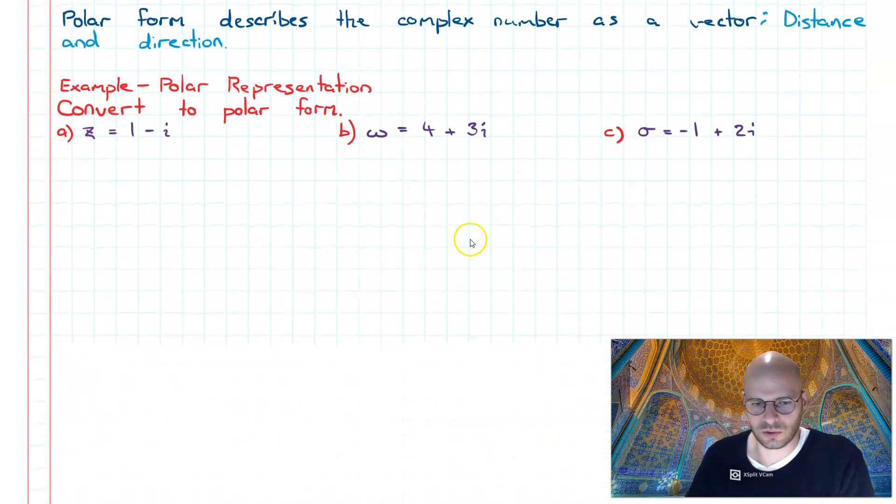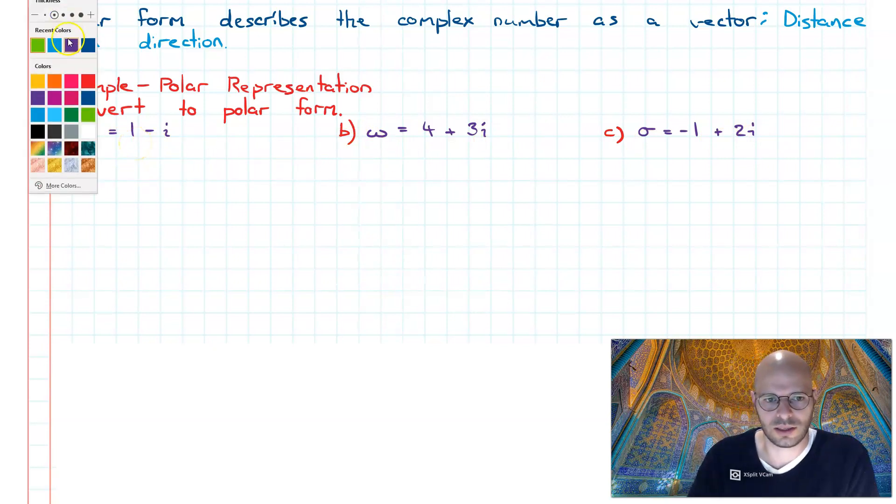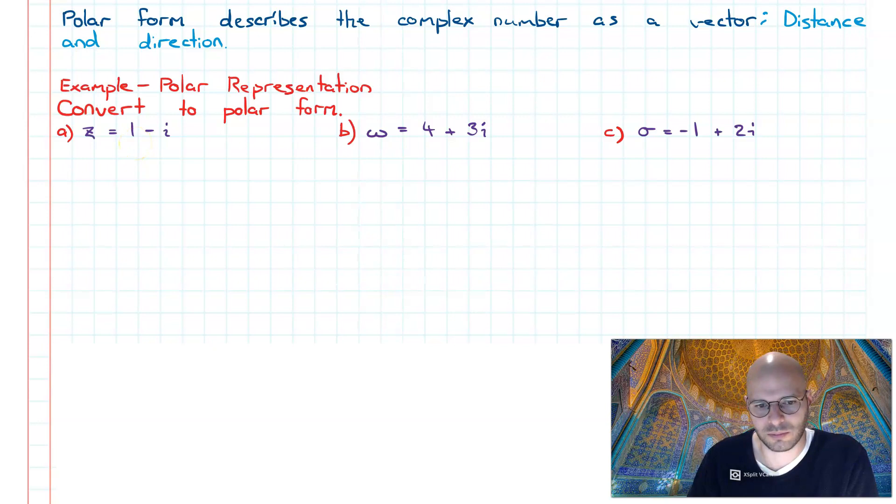Let's have a look at a few examples. Polar representation: what we want to do is convert the following complex numbers into their polar representation or their polar forms. So we've got Cartesian form, let's go to polar. This can be done in three steps.